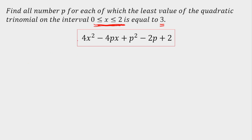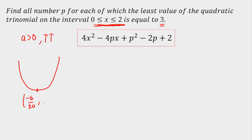The first thing I observe for this quadratic equation is that A is greater than 0, which clearly means it's an upward parabola. For an upward parabola, I know the least value comes at x = -B/2A. If I put this value, I'll get the least value as -D/4A.